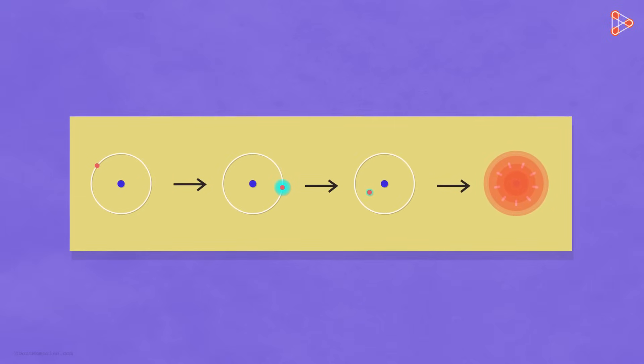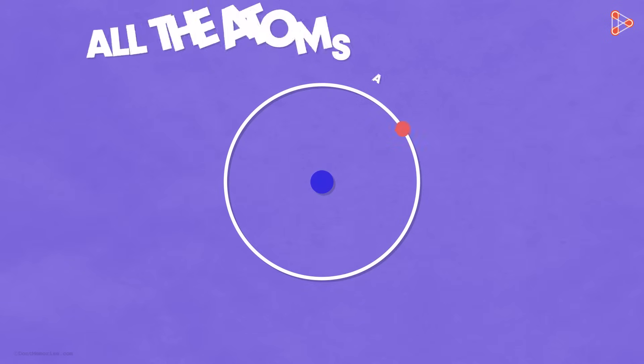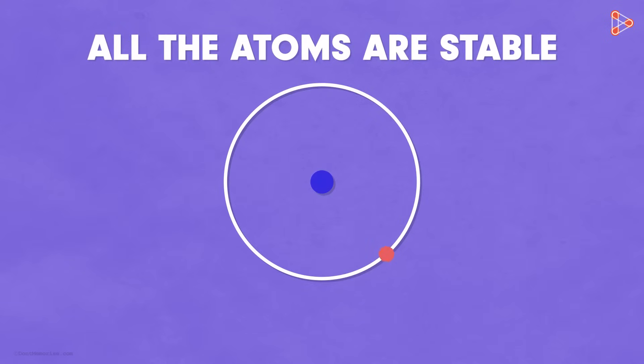But wait a second, all these things do not happen in an atom. And how do we know this? Because in nature, all the atoms are stable. That means the hypothesis put forth by Rutherford was also incorrect? Not really. The hypothesis just needed slight modifications.